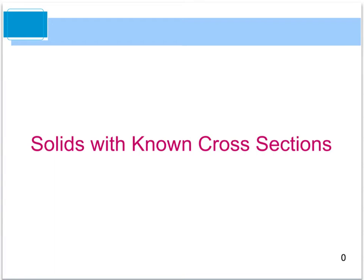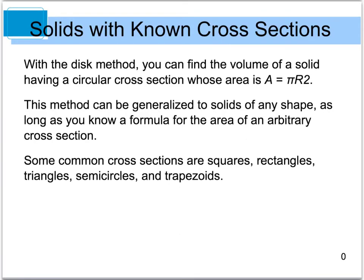The second part of section 7.2 deals with solids of known cross-sections. So far in 7.2, we've dealt with the disk method and the washer method, which was really a disk method. When dealing with a disk method, we were dealing with a circular cross-section where we knew that the area was equal to pi r squared. Now we can use this same technique when we have something that's not necessarily a circle. If we have a common cross-section such as a square, rectangle, or triangle where we know the area, we can also find the volume.